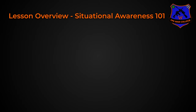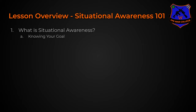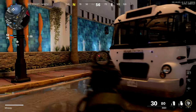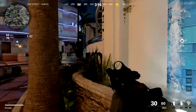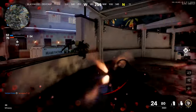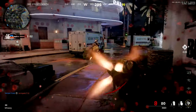The overview for Situational Awareness is: first, what is Situational Awareness? It's broken down into three parts — knowing your goal, knowing the enemy goal, and taking action based on those goals. As we go forward discussing ways to improve and implement Situational Awareness in your FPS games, keep in mind that this is what we're aiming for.